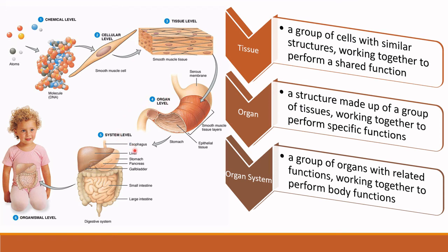A group of organs with related functions — for example, the esophagus, liver, stomach, and pancreas are all organs useful for the digestive system. A group of organs with related functions working together to perform a body function is called an organ system. When a group of organ systems join together, they form an organism.